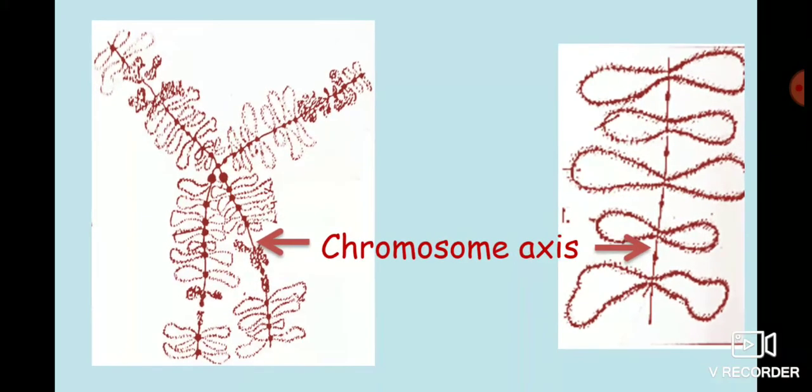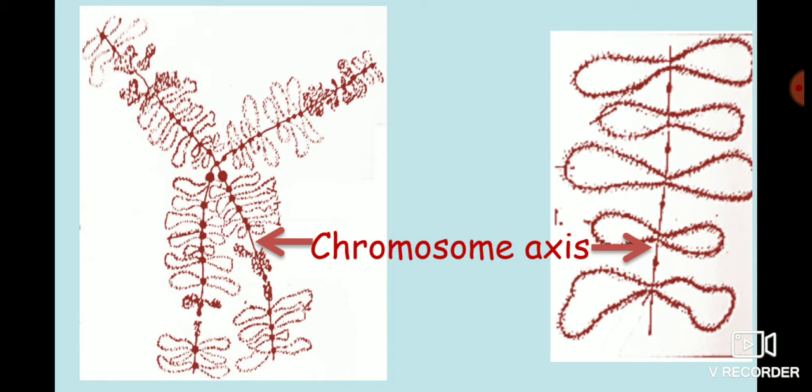During the diplotene, the homologous chromosomes begin to separate from each other and are held together at chiasmata. Under light microscope, each chromosome is seen to consist of an axis along which is a row of dense granules or chromomeres. This axis is called the chromosome axis. Each chromosome of the pair of homologous chromosomes consists of two chromatids which are represented by this chromosome axis or axial filament.